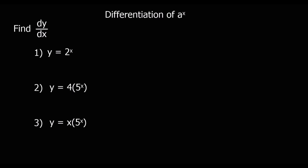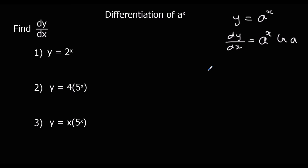Okay, here we've got some questions. I'm going to write that result in the top corner: if y equals a to the power of x, dy/dx is a to the power of x ln a. So for question 1 we've got y equals 2 to the power of x. All we're doing here is replacing a with 2, so dy/dx is 2 to the power of x ln 2.